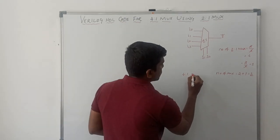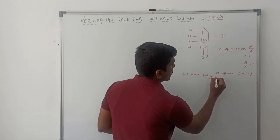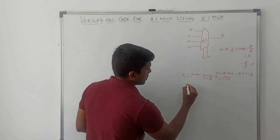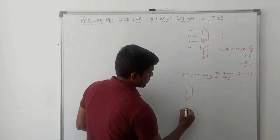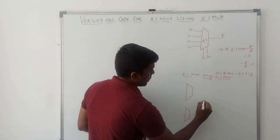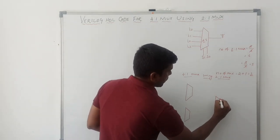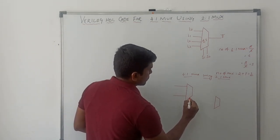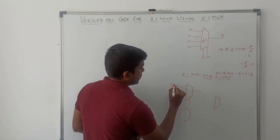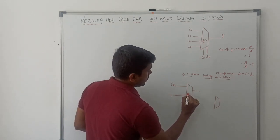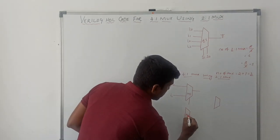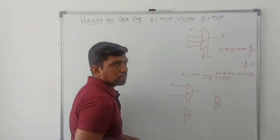So totally 3 two-to-1 muxes are required to design a 4-to-1 mux. Now I draw the structure for a 4-to-1 mux using 2-to-1 mux. We need 3 two-to-1 muxes. The inputs I0 and I1 go into the first mux, M1. M1 represents mux 1, M2 represents mux 2, and M3 means mux 3.